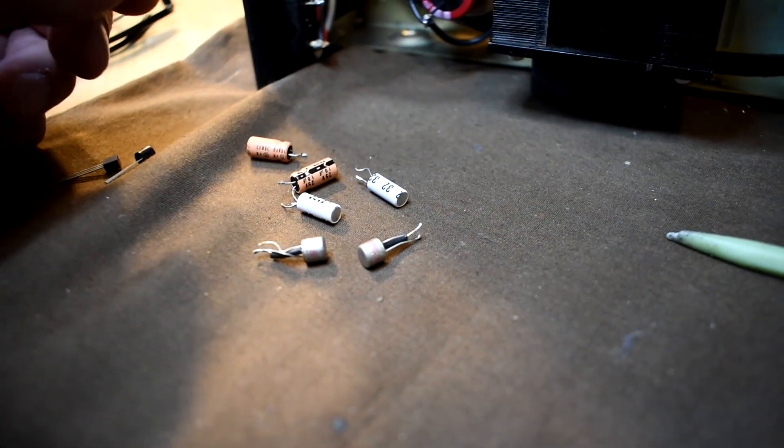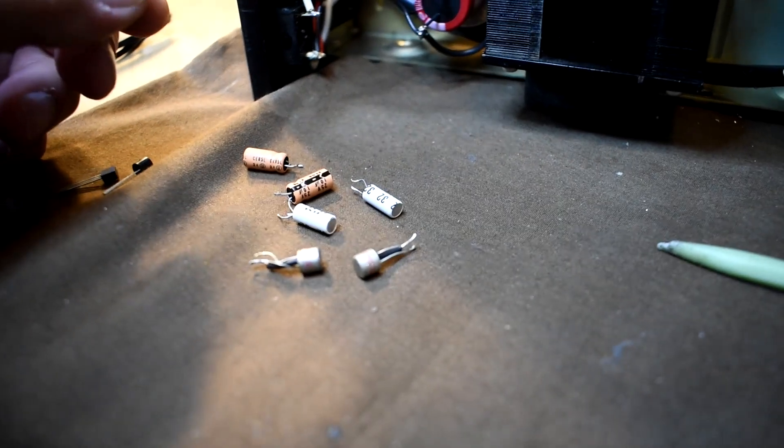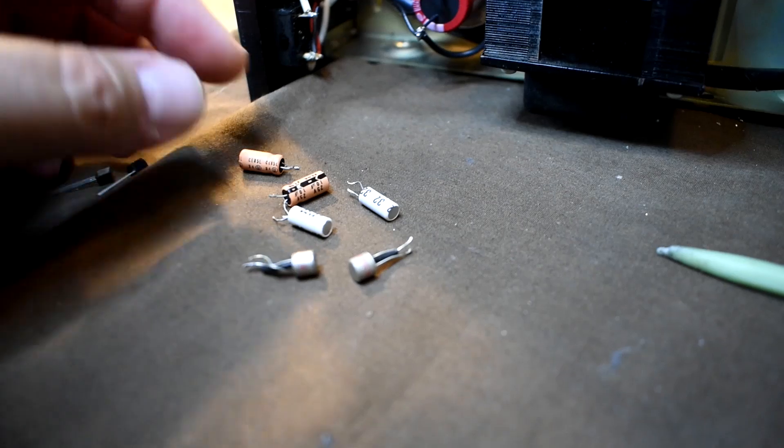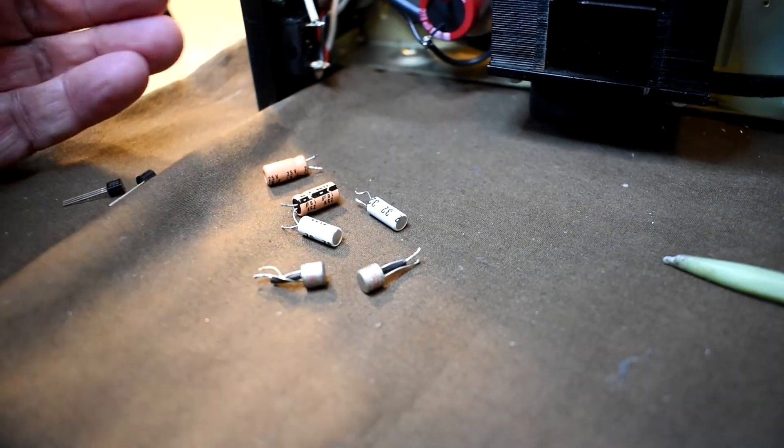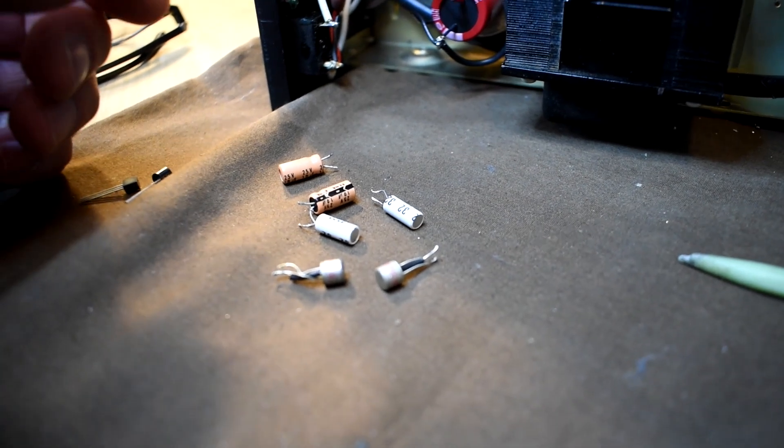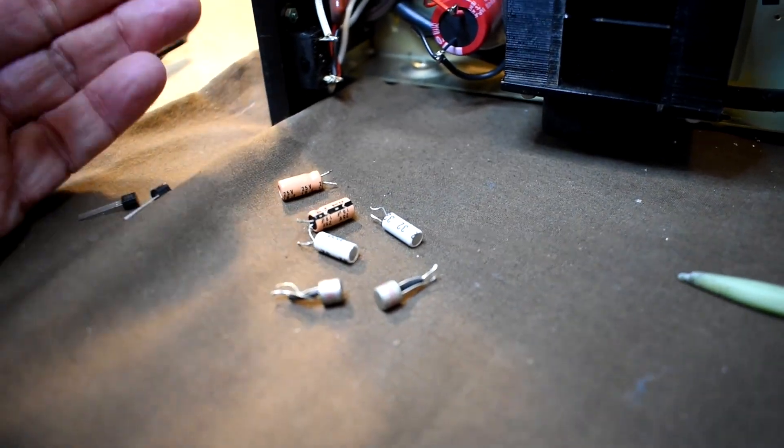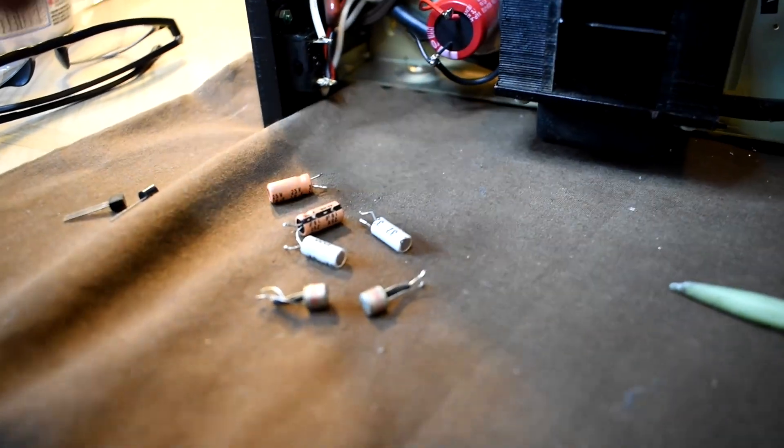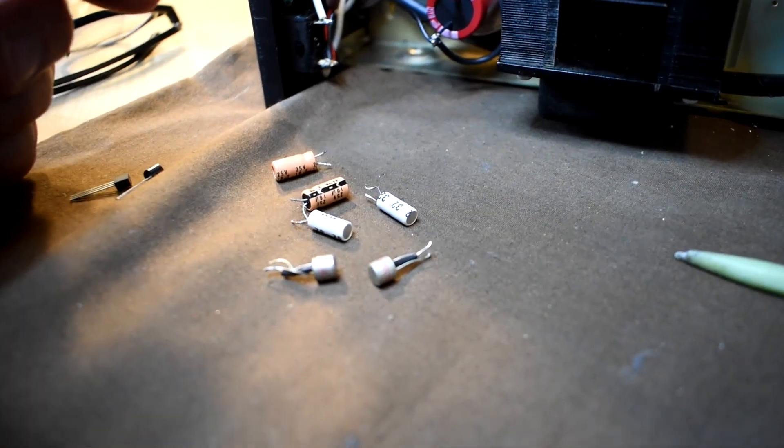I had a bunch of metal PN2222s, I believe they were, and I used them. They were a good match for gain and everything, but they were causing the amp—even at a quarter volume, just tapping around on it—it was being picked up.